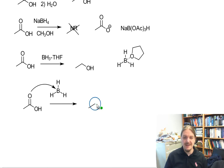And so you generate this intermediate here. And the boron now has a negative charge and the oxygen has a positive charge. And so now the hydride transfer can happen internally because it's pretty close together.